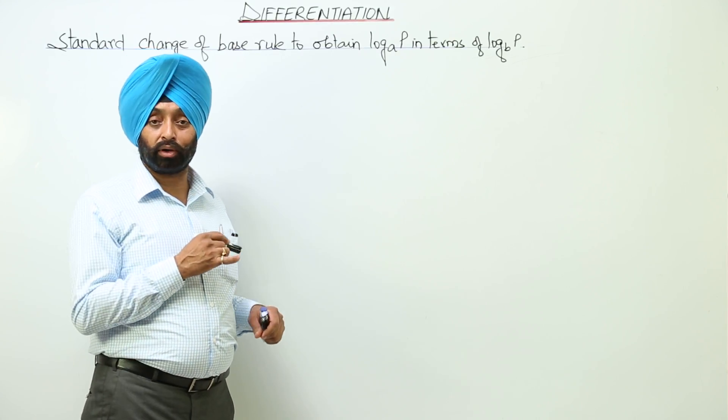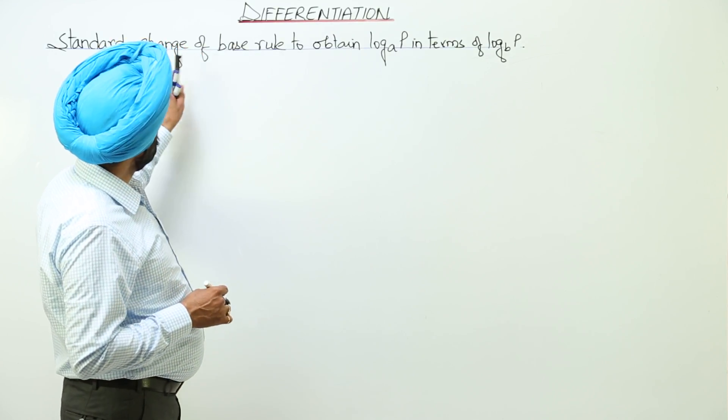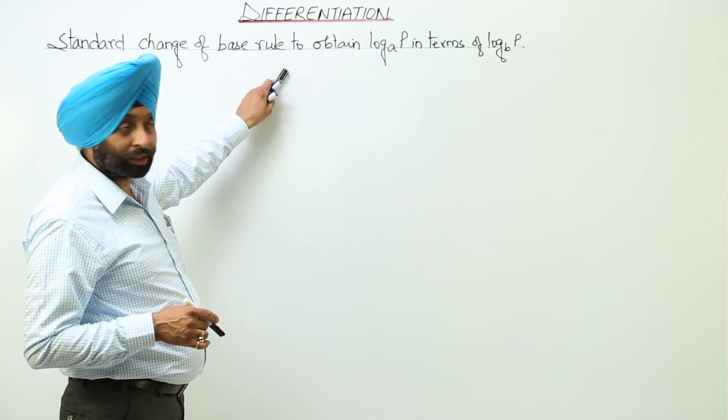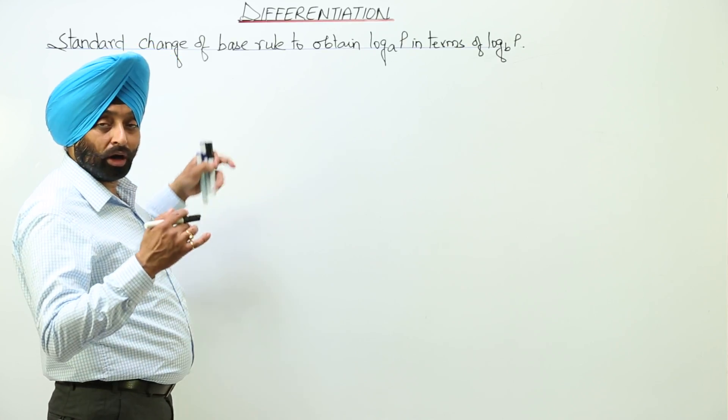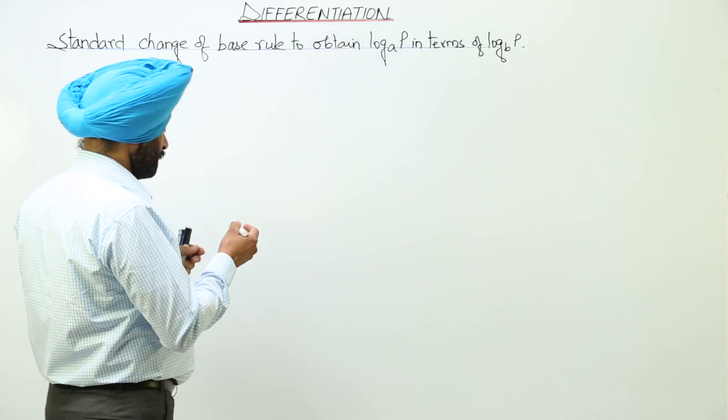Now a very important property for the logarithm: the change of base rule. Is it clear, change of base rule? Now how is it applied? Let me describe you first.